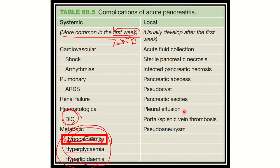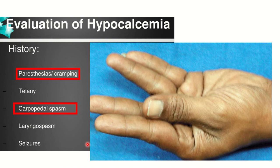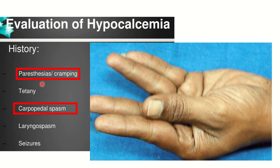Now let's look at what hypocalcemia can cause clinically. In cases of hypocalcemia, different symptoms may arise: paresthesia or cramping — that is, abnormal sensation in any part of the body — and tetany, which may develop as carpopedal spasm, laryngeal spasm, and seizures. In our question, we saw paresthesia and carpopedal spasm, and these occur due to hypocalcemia. When calcium levels decrease, paresthesia, cramping, tetany, carpopedal spasm, laryngeal spasm, or seizures may develop.